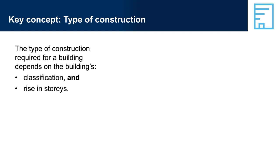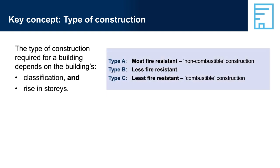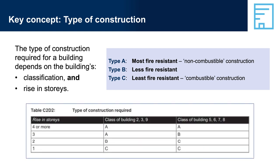The height of the building determines the likely evacuation times and difficulty. Thus, these two factors are used to determine the minimum type of fire-resistant construction required for Class 2 to 9 buildings. The exact requirements for each type of construction are contained in Specification 5 in Volume 1. Some other factors will also determine fire-resistant construction requirements, such as the size of individual fire compartments or atriums in a building. There are special rules for some configurations of some building classifications, such as buildings with multiple classifications.